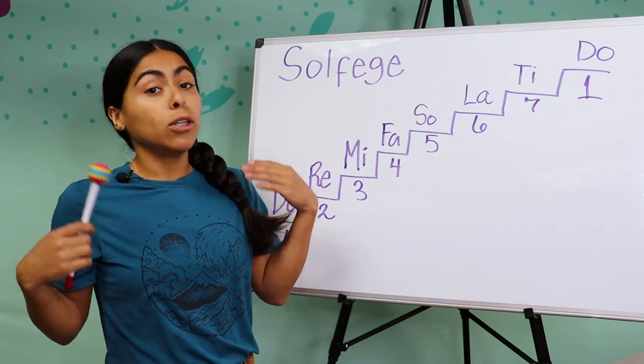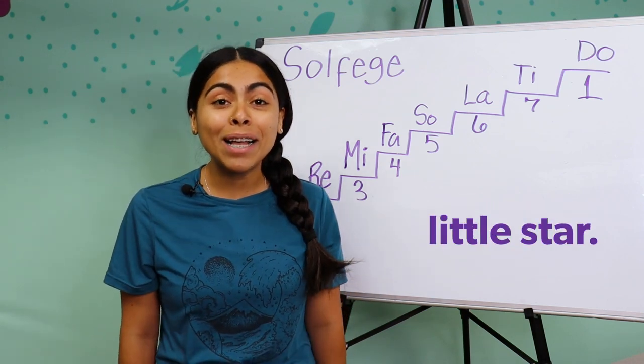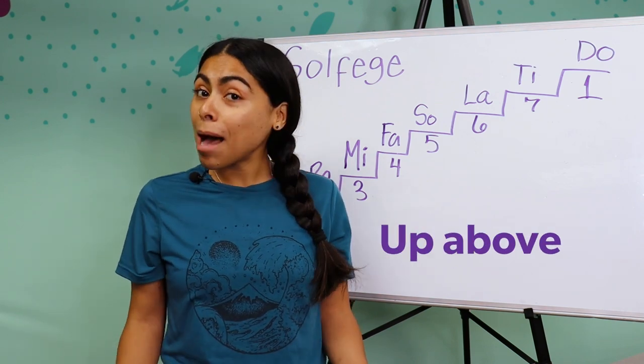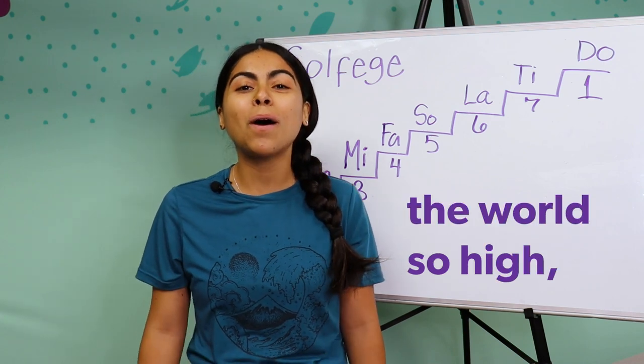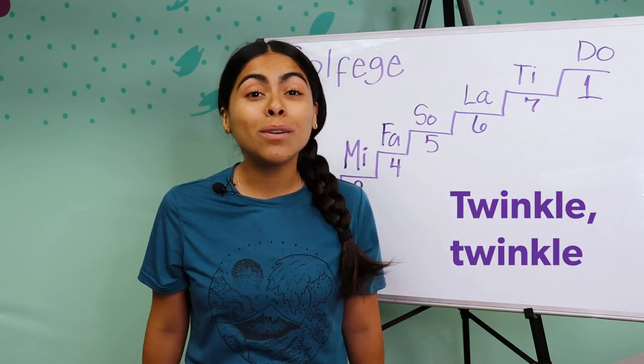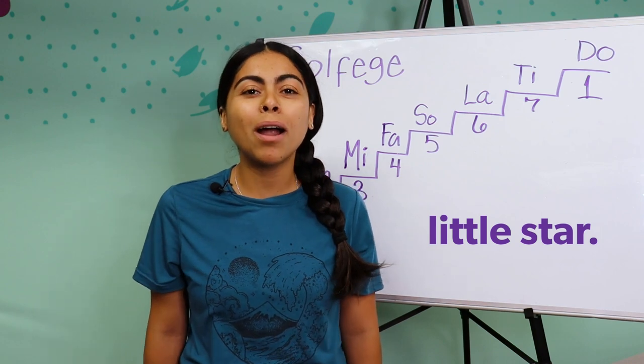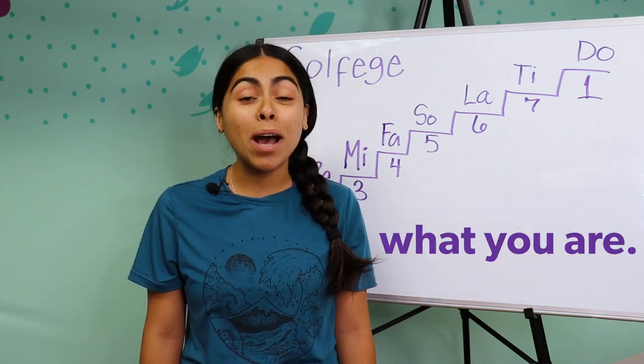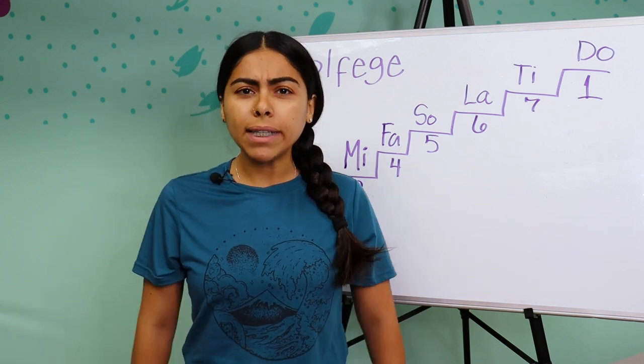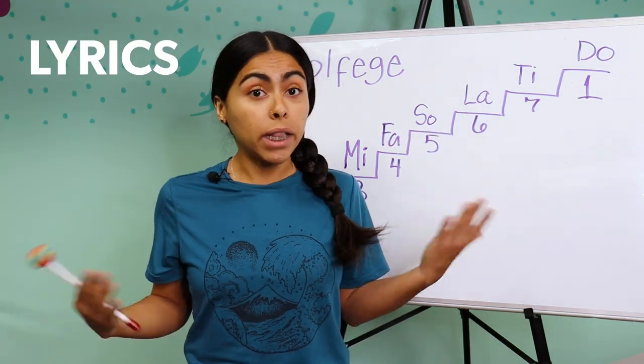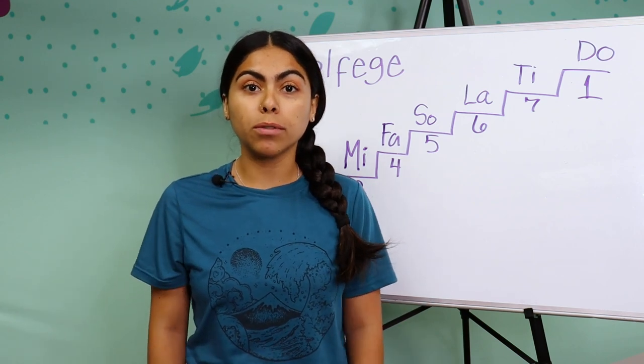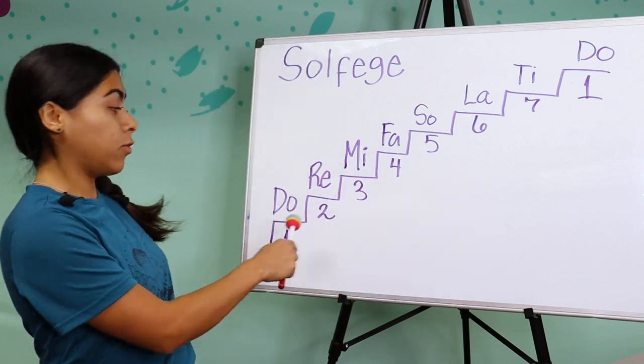Let's do it together. Twinkle Twinkle Little Star, How I wonder what you are. Up above the world so high, Like a diamond in the sky. Twinkle Twinkle Little Star, I wonder what you are. Beautiful, everyone. So those were the lyrics. Lyrics are just the words for our song. We can sing with lyrics or we can sing with short sounds. Let's do this all together.